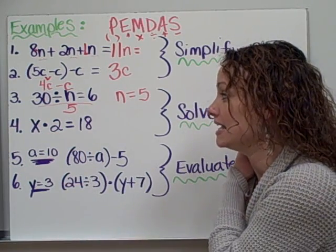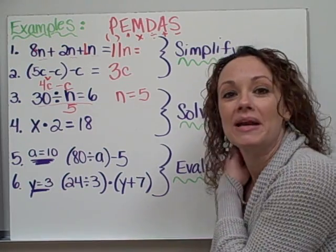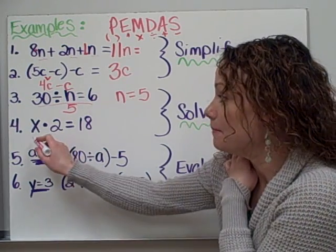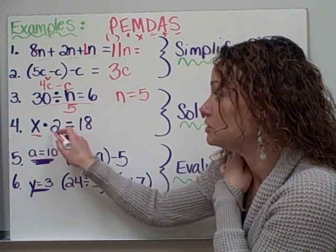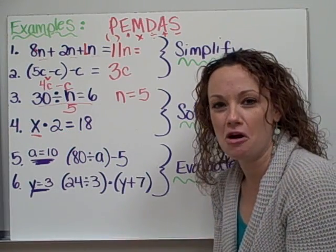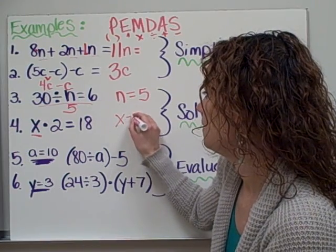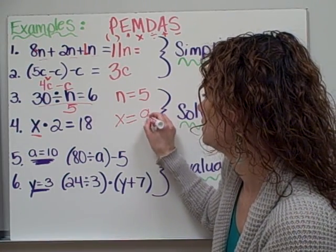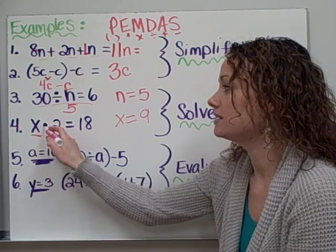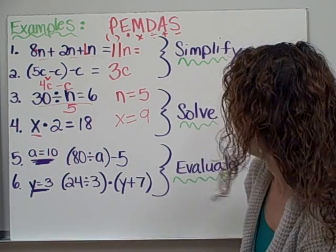30 divided by 5 does equal 6. Let's take a look at the next example. x times 2 equals 18. So I need to ask myself, some number times 2 equals 18. And again, if I know my multiplication and division fast facts, I know that x must be equal to 9. Because 9 times 2 will give me 18.